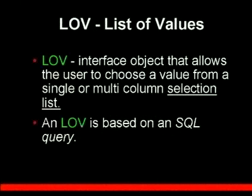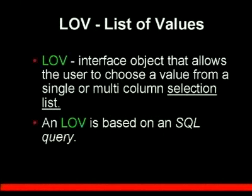Both the LOV and the alert are pretty much like a dialog window that you're used to. An LOV, which means a List of Values, is an interface object that allows the user to choose a value from a single or multi-column selection list. For example, we have this issue with the zip code on a student or instructor update form — we only want them to enter zip codes which we have in the list.